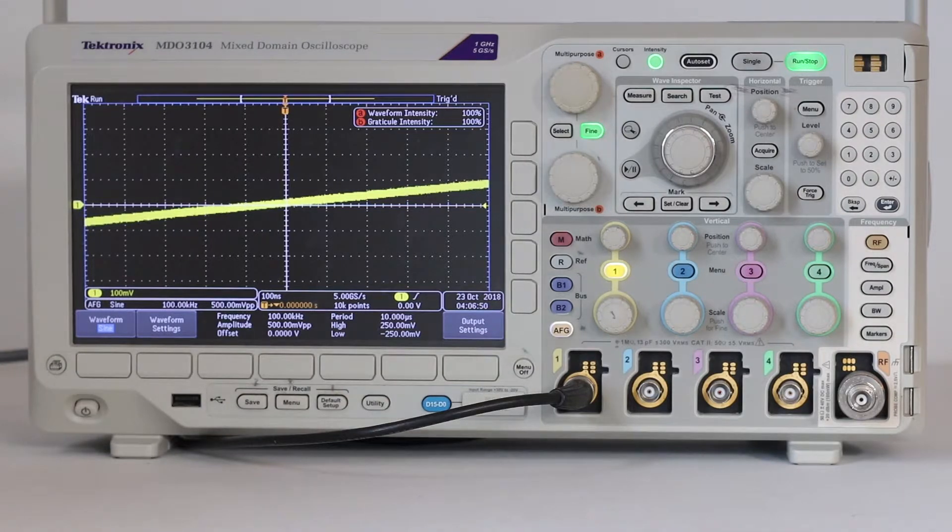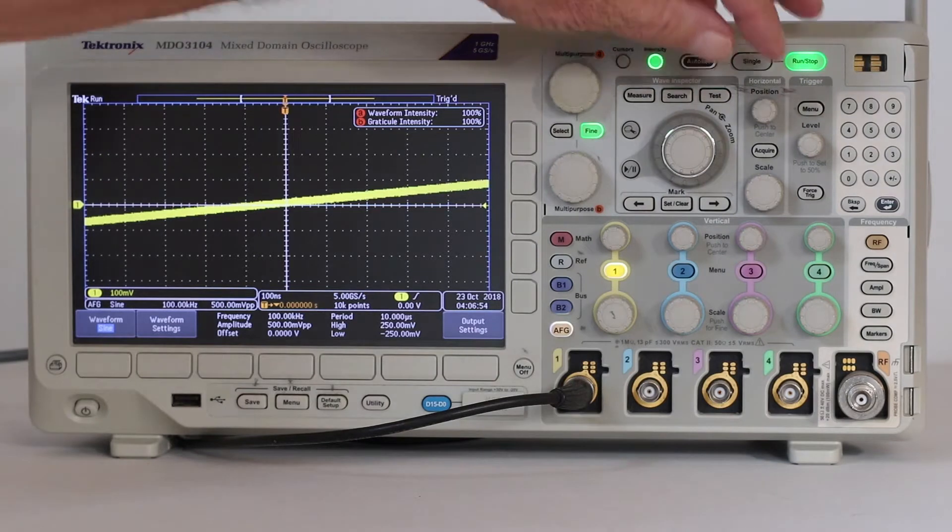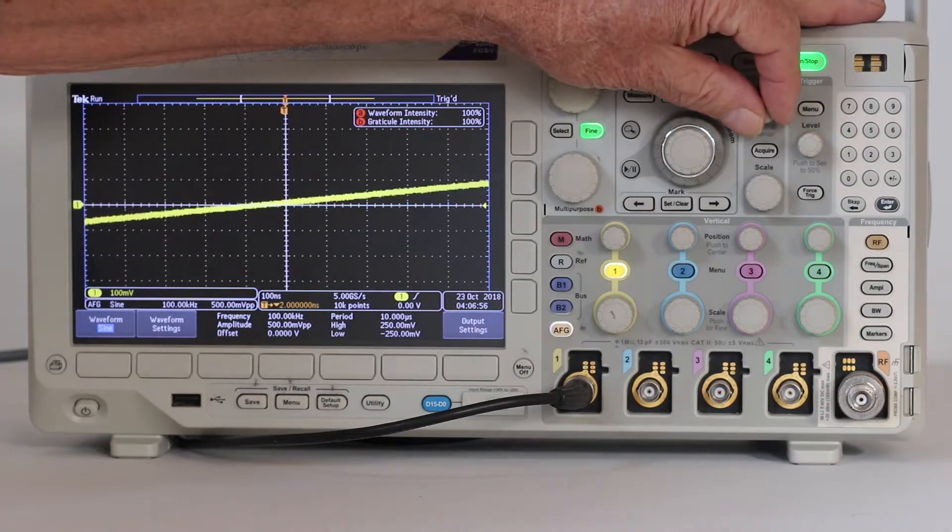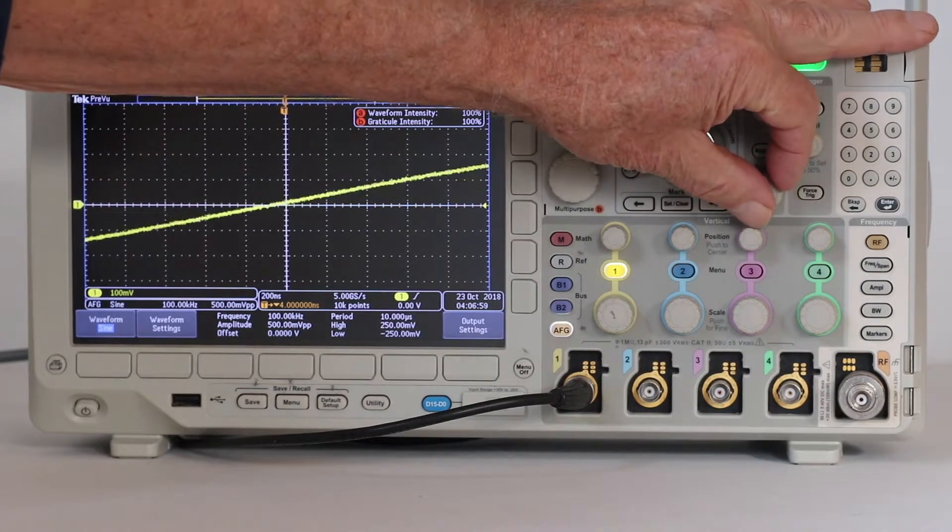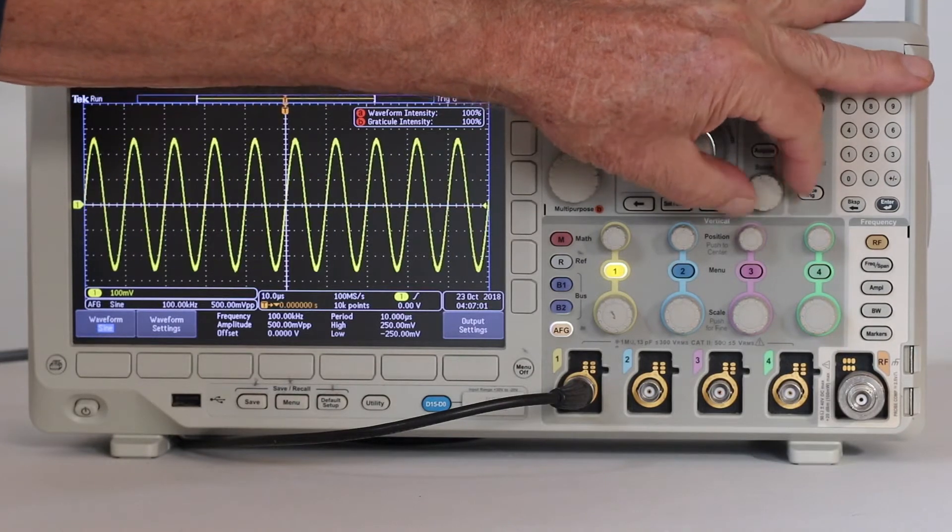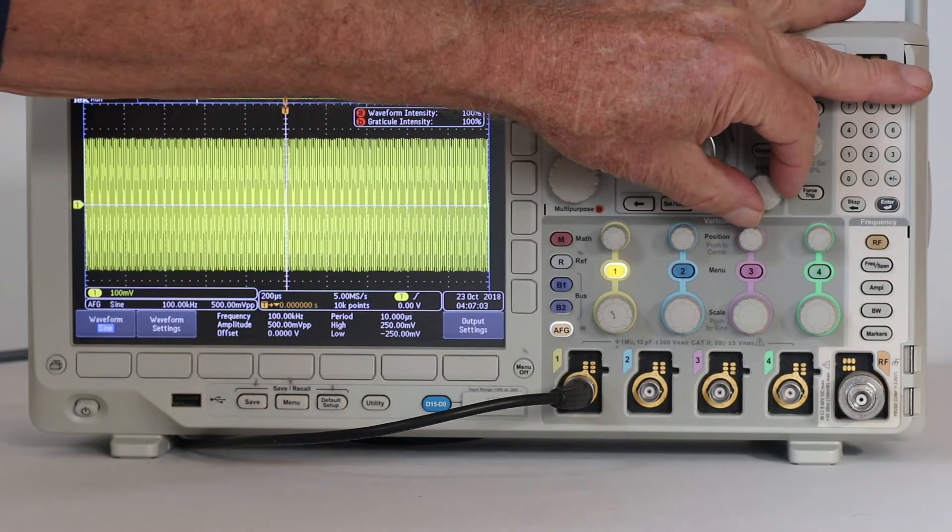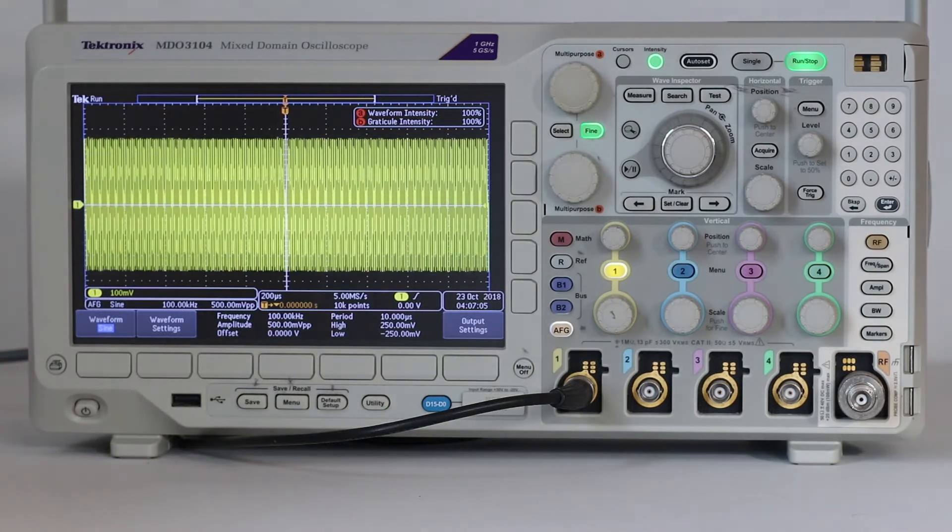Or it can compress so that the individual cycles cannot be discerned. Of course, time itself cannot be affected. What is altered is the way in which it is displayed on the oscilloscope screen. Time marches on at a rate that, as far as we know, does not change.